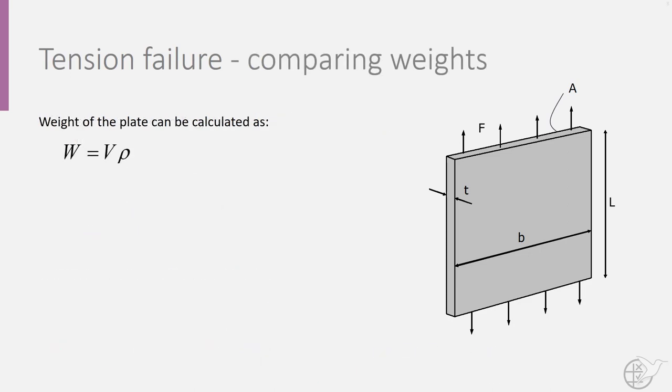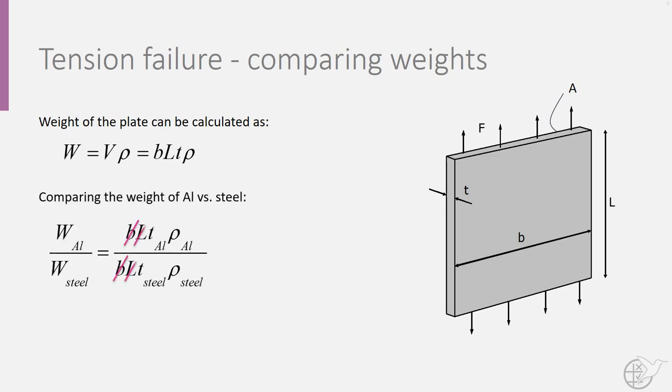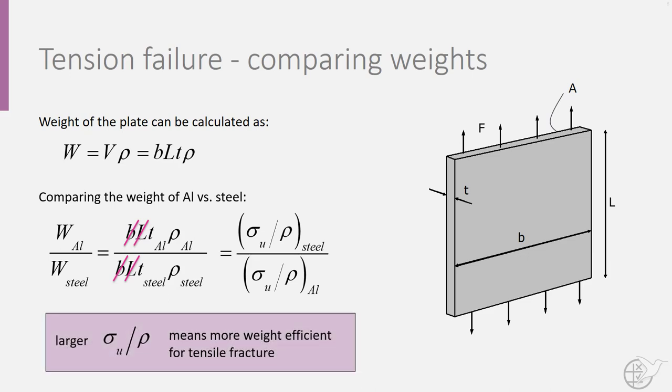So let's compare these weights. Weight is simply volume multiplied by density, so for our flat plate, weight would be equal to the width times the length times the thickness times the density. If we compare the weight of the aluminum to the weight of the steel, we would get the following expression. Substituting in the expression for thickness derived from our characteristic equation, we see that the comparison of weight reduces to a comparison of the ultimate strength of the material divided by the density of the material.